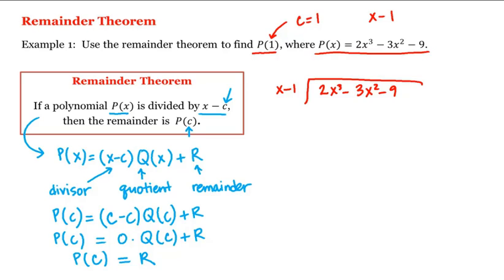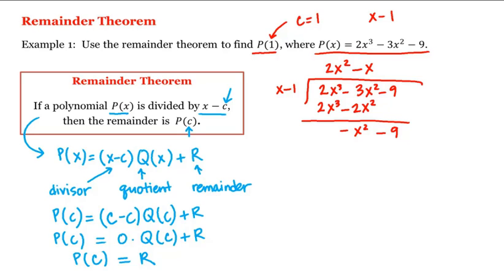x goes into 2x cubed, 2x squared times. And 2x squared times x minus 1 is 2x cubed minus 2x squared. When we subtract we get negative x squared minus 9. Then x goes into negative x squared, negative x times. And negative x times x minus 1 is negative x squared plus x. When we subtract, we need to be careful.